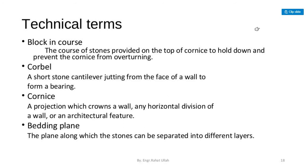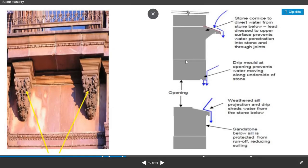Next is corbel — a short stone cantilever jutting from the face of the wall to form a bearing is known as a corbel. Next is cornice — a projection which crowns a wall or any horizontal division of a wall or an architectural feature is known as a cornice. Then, bedding plane — the plane along which stones can be separated into different layers is known as the bedding plane. Here you can see the corbel, and this is known as cornice — a stone cornice to divert water from the stone below.